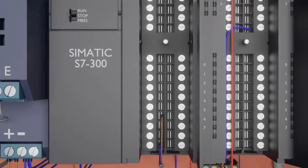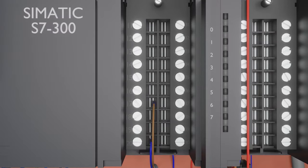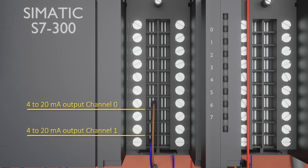This particular CPU has two analog output channels. Terminal 17 is the current output for channel 0, and terminal 19 is the current output for channel 1. Terminal 20 is the common terminal for these analog outputs.